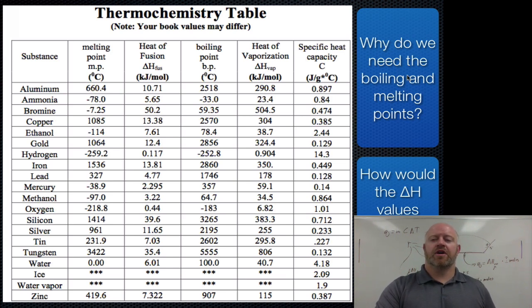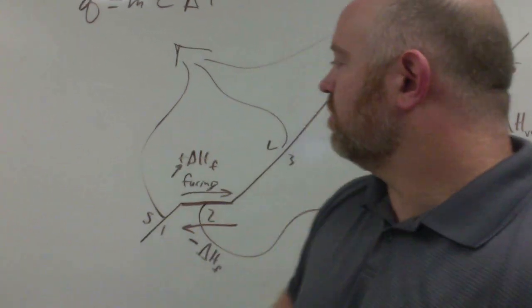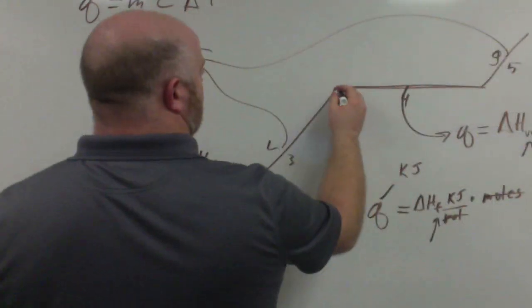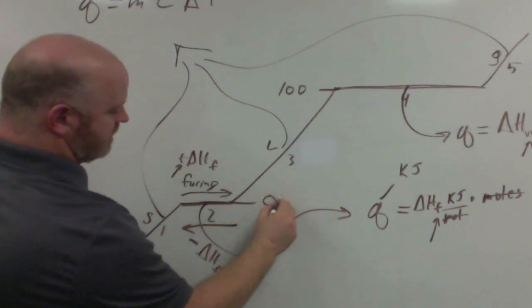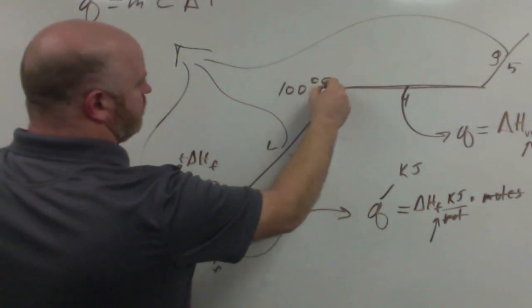So, a couple of questions for us. Why do we need the boiling and melting points? We have melting point here and boiling point here. Well, if you think about it, we know that water melts at zero and boils at 100. So we know that this flat line is at 100 and this flat line is at zero degrees C.